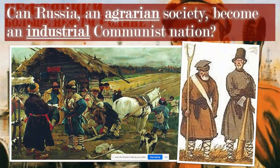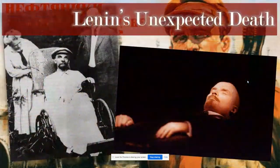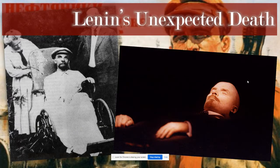Despite this setback, Russia needed to shift from an agrarian society into an industrial one, and once all those workers were created, the goal was to redistribute property so that everybody would truly be equal. Lenin, unfortunately, didn't get the chance to fulfill his own mission — he suffered a series of strokes in the early 1920s, and by the mid-1920s, Lenin had passed away.